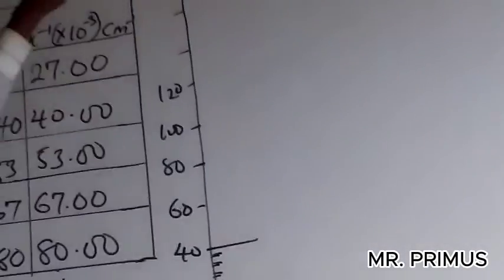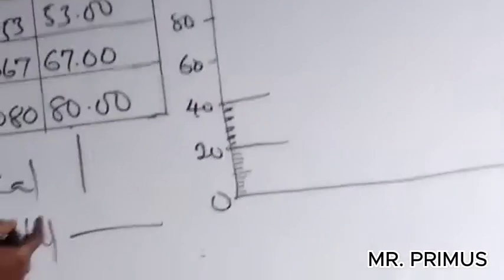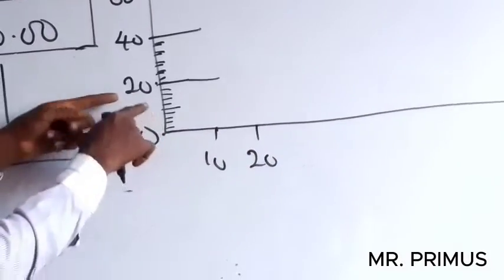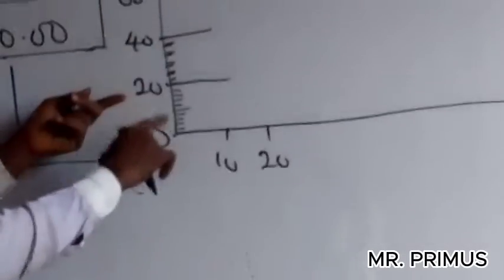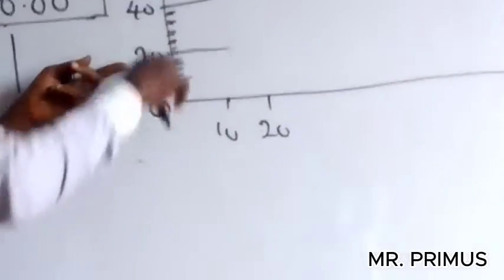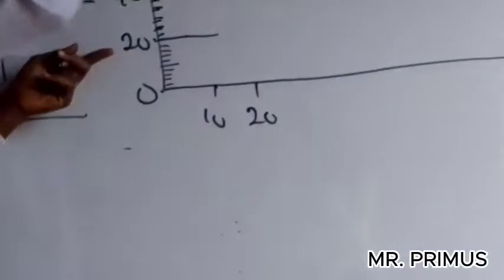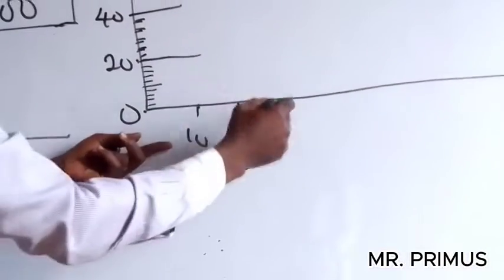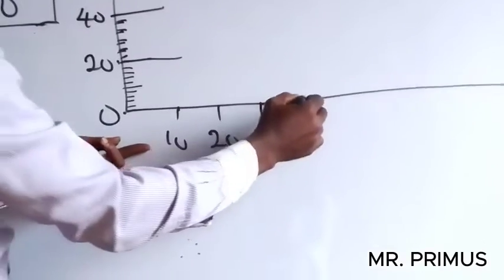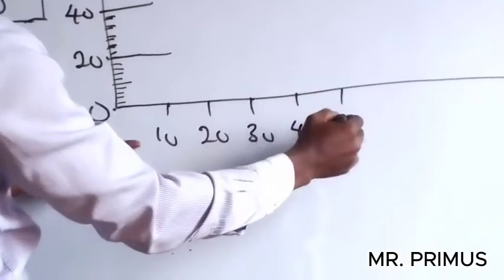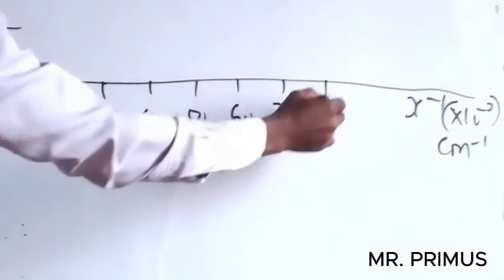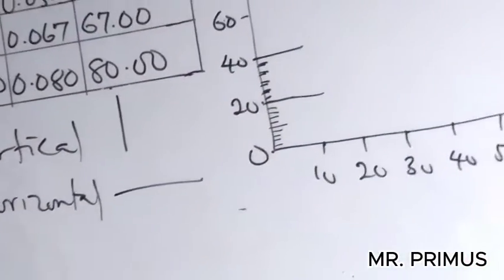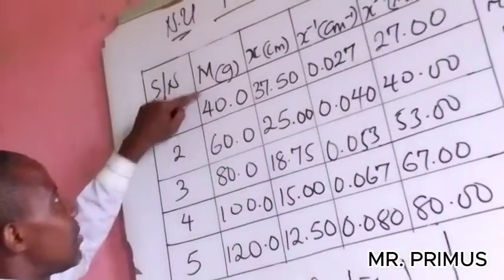Then for the horizontal axis, the lowest number here is 27 and the highest is 80. This one cannot go by 10 per small division. We can say 20, 40, 60, 80, 100, 120, 140, 160, 180 for larger scale. But using intervals of 10: 10, 20, 30, 40 up to 90 works — the highest number we have is 80, so we are going to plot this now.